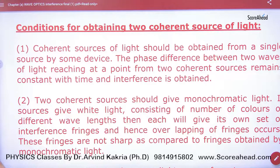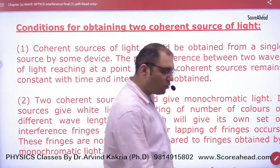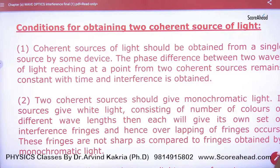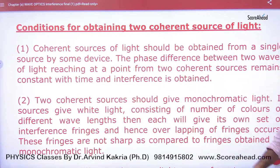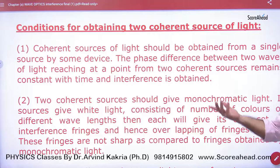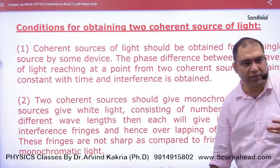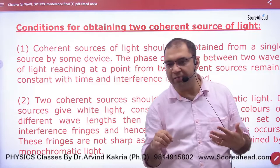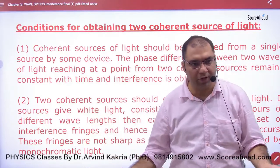Conditions for obtaining two coherent sources of light: the first condition is that coherent sources of light should be obtained from a single source, from the same device. Young's experiment also demonstrated this — he took one source, put a slit, and obtained two coherent sources from that single source.